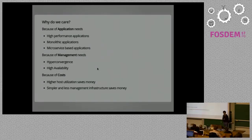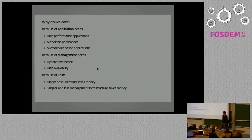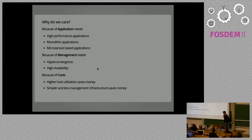Another benefit is high availability. Kubernetes has a very nice HA concept built in. Instead of teaching your cloud-ready applications to work with your virtualization environment, you could rewrite your virtualization infrastructure to deploy it as containers and make use of Kubernetes HA concepts out of the box. When you achieve the goal of combining those two, it costs less — fewer components to manage means fewer things that can go wrong — and makes everything easier.